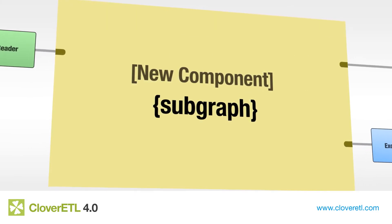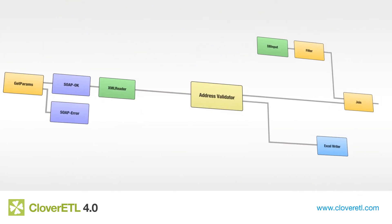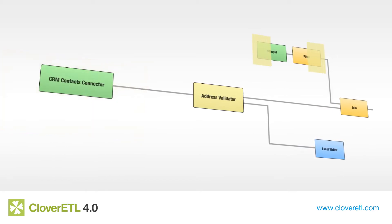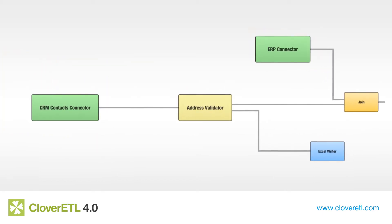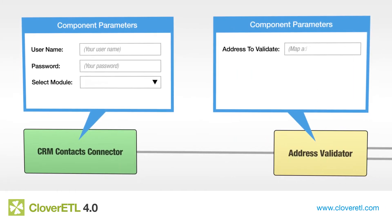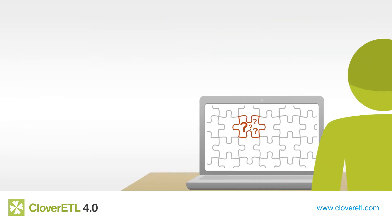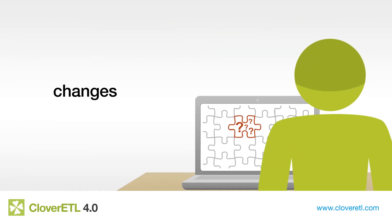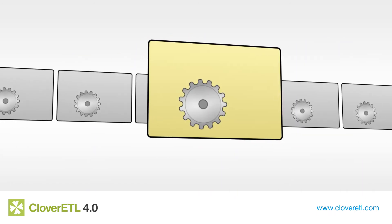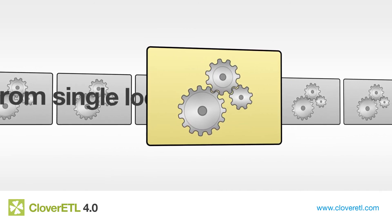With subgraphs, you're effectively creating your own library of components that reflect the business logic of your data. These components conveniently hide all the nuts and bolts of the complexity inside, making the transformation simpler and clearer. Subgraphs can expose an easy-to-understand interface so that users don't need to see or know its inner workings to effectively use their full potential. Sharing subgraphs fundamentally changes your teamwork dynamic, allowing teammates to help each other with their expertise. And finally, managing and updating complex business logic can now be done from a single location.